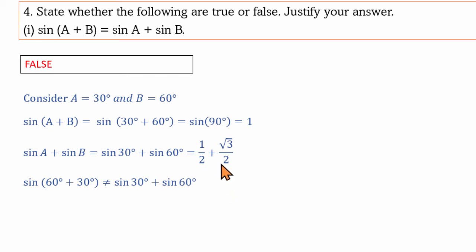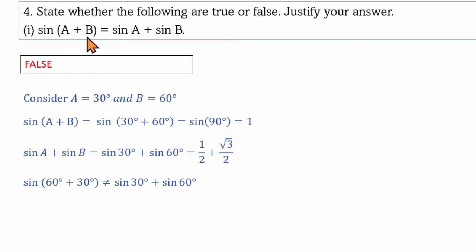Since they are not equal, the statement is not true. We proved with one counterexample using A equals 30° and B equals 60°. Therefore sin(A+B) is not equal to sinA plus sinB for all A and B.